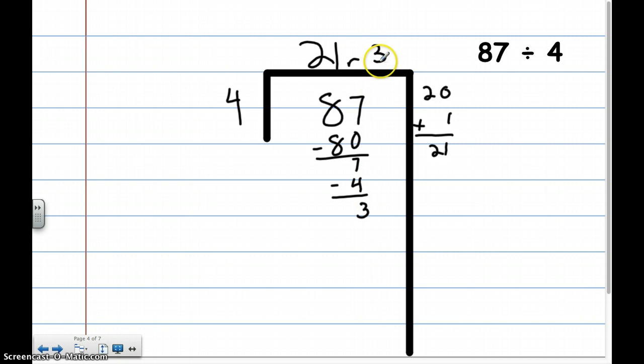Because this is my remainder. So, I'm going to put it up here. If I did 21 times 4, that gives me 84. Then I have to add my remainder of 3. And that gives me 87. So, my answer does check whenever I multiply to check it.